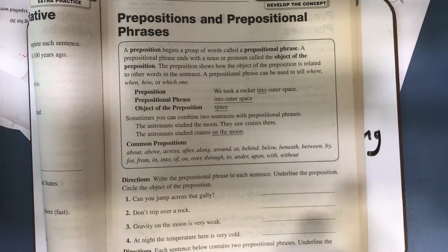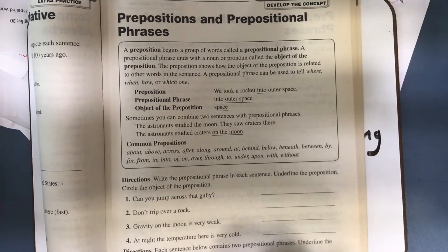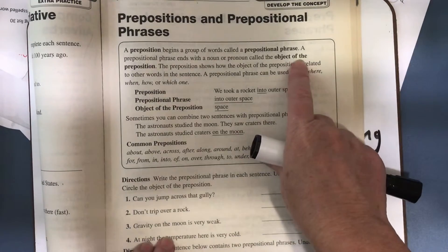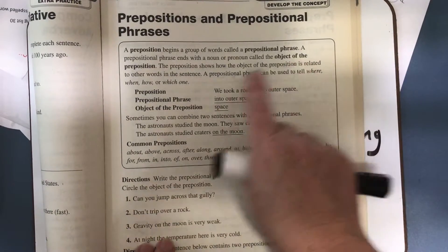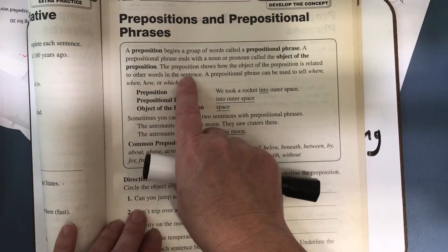Okay, so the preposition is the first word in the phrase and the noun is the last word in the prepositional phrase, and that noun is called the object of the preposition. The preposition shows how the object of the preposition is related to the other words in the sentence.